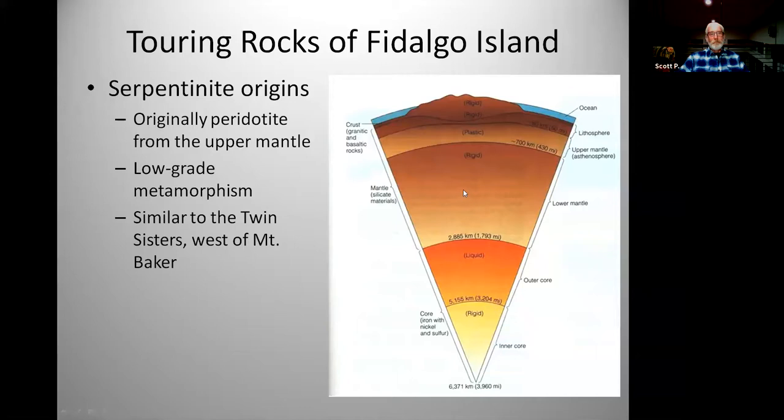The Twin Sisters — west of Mount Baker — is all ultramafic rock from the mantle, somehow thrust up into the North Cascades. An interesting fact: it's the largest ultramafic massif exposed on the face of the earth, which is quite a distinction.